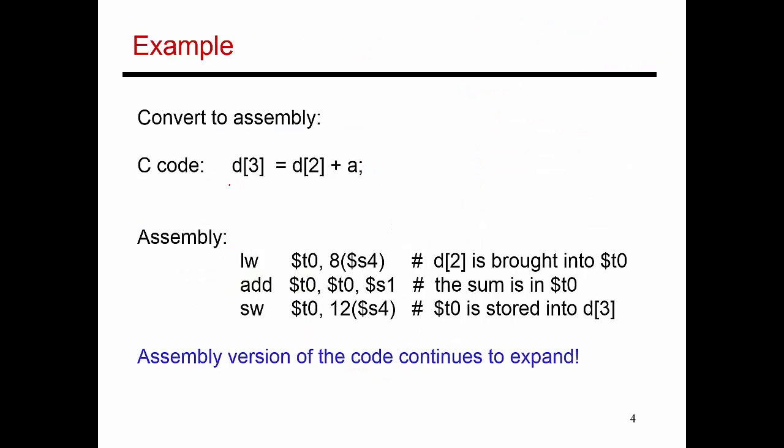So I'm going to build on that in this next example here. So the next line of code, let's say, was taking D2, adding A to it, and then storing that value into D3. So the corresponding assembly instructions would be as follows. So since S4 is a pointer to D0, to get D2, I need to add 8 bytes to it. So I add 8 to S4. That gives me the address of D2. I bring that value into temporary register T0. Since the value of A is already sitting in S1, I add S1 to T0. The result is saved again in T0. And then I store T0 into the address of D3. And how do I get the address of D3? I add 12 to S4. So S4 is a pointer to D0. I add 12 to it to get the address of D3. And then I store the value in T0 into that address.